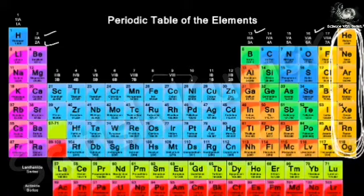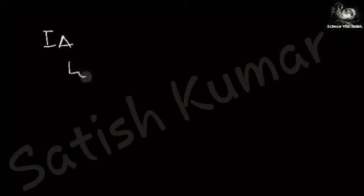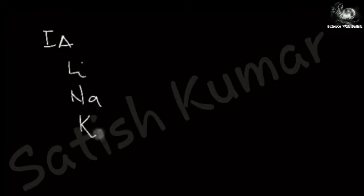Now, how are the elements grouped? If you take the first A group, it contains hydrogen, lithium, sodium, potassium, and so on. Let us consider lithium, sodium, and potassium to understand how they are grouped together.